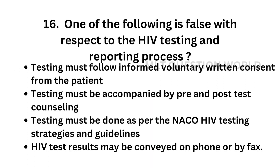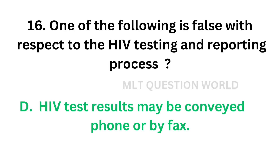Question number 16: One of the following is false with respect to the HIV testing and reporting process. Option A, testing must follow informed voluntary consent from the patient; option B, must be accompanied by pre and post-test counselling; option C, must be done as per NACO HIV testing strategies and guidelines; option D, the results may be conveyed on phone or by fax. The correct answer is option D. It is false — HIV test results must be conveyed to the patient directly.